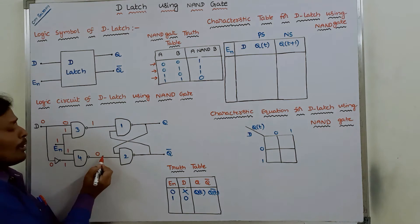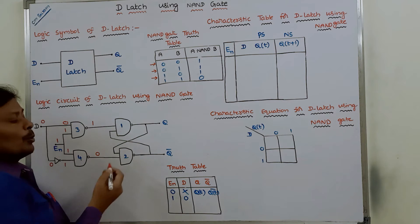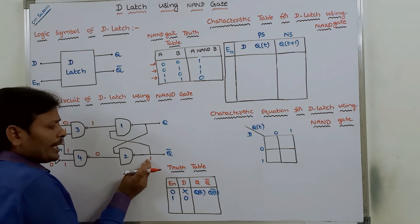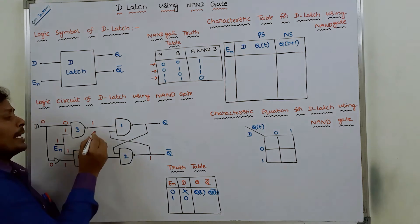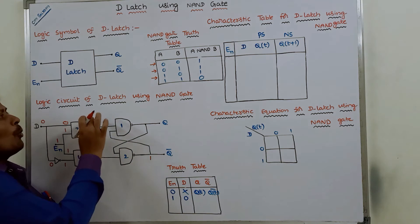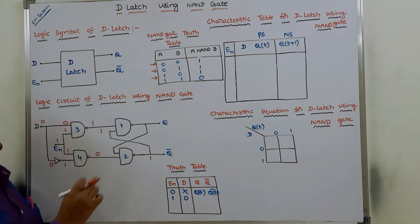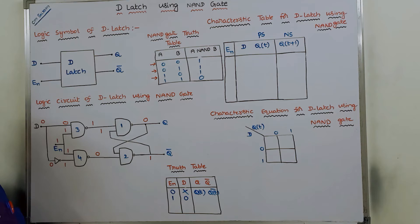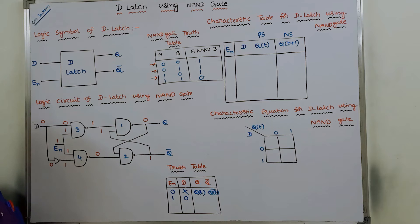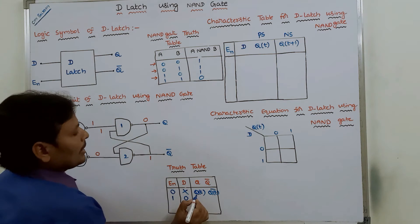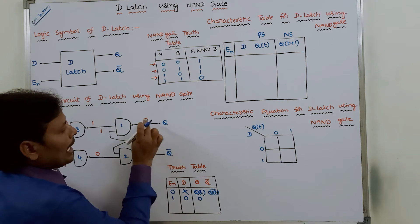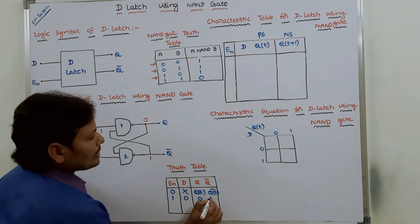For the second NAND gate, one input value is 0, so the output is 1. This 1 is passed as input for the first NAND gate, so 1 and 1 are passed to the first NAND gate — the output of the first NAND gate is 0. Therefore, when D=0 and enable=1, Q=0 and Q bar=1.